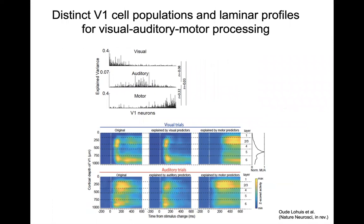There's further evidence for cross-modal processing. The whole population of V1 neurons splits up into three groups — a purely visual group, auditory in the middle, and motor. There are also cells that do both, for instance auditory and motor, but also cells that exclusively code either visual or auditory and not motor. The cortical depth profile shows that auditory predictors activate both superficial and deep cortical layers in the mouse, whereas motor predictors primarily activate the superficial layers — showing a dissociation between auditory and motor.